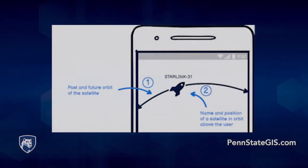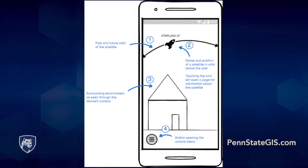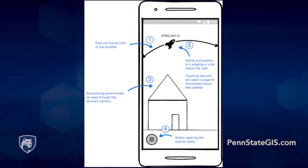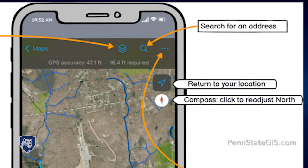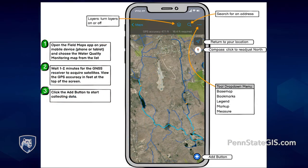You get to choose the term project topic idea in this class and the options are endless. You can focus your project proposal on your interests, hobbies, or a project at work. Previous projects have focused on a voting facilities app, a virtual reality app, and a trail maintenance app.